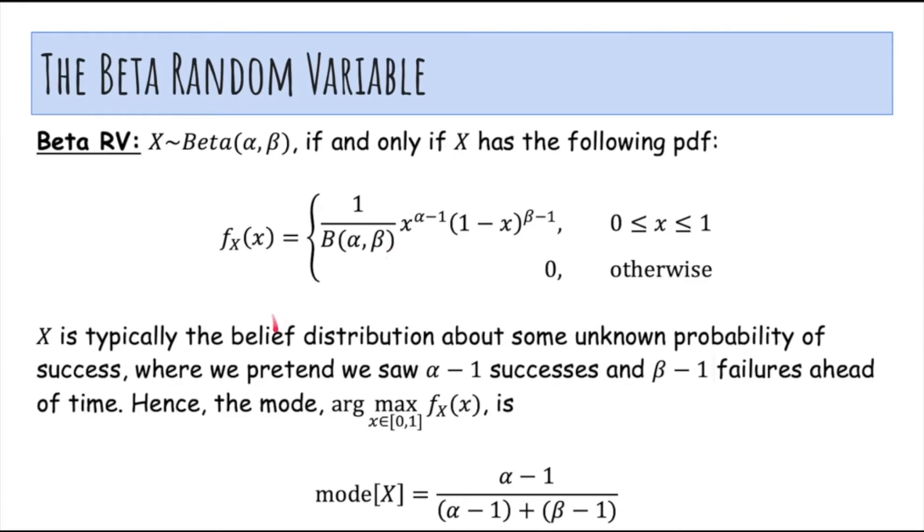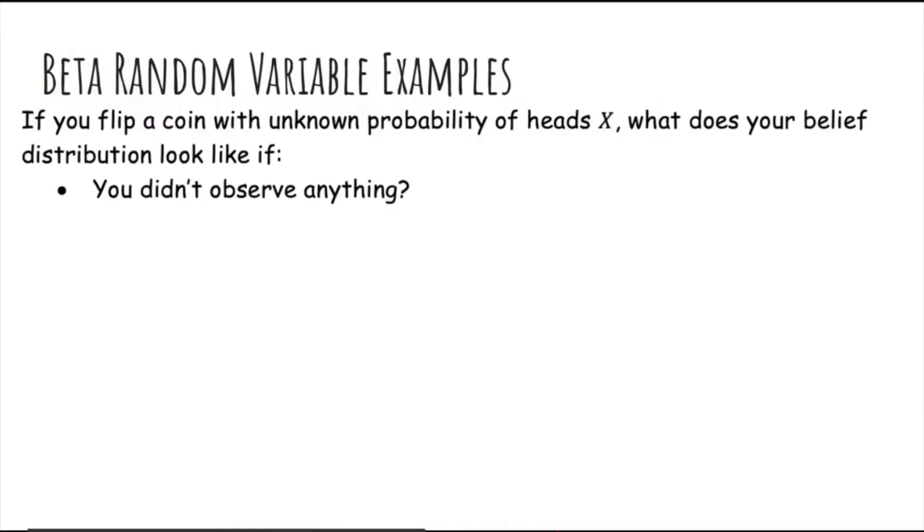In this case, the mode, where the most likely value of the probability, is just the number of successes divided by number of successes plus number of failures.